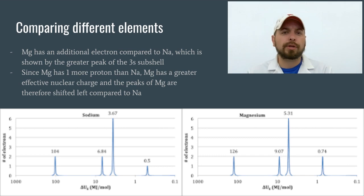But the other thing I want you to look at here is where on the x-axis each of these peaks falls. If you look at the sodium, all of its peaks are shifted a little bit to the right compared to the magnesium. That means each of those electrons is a little bit easier to remove from a sodium atom than it is from a magnesium atom.